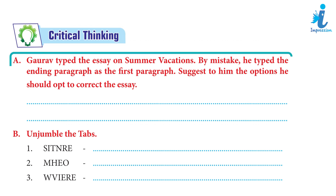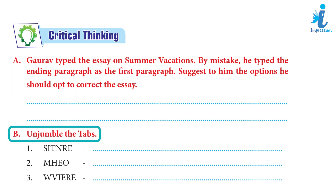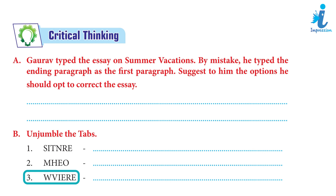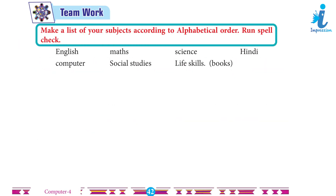Critical Thinking. A. Gotta typed an essay on summer vacations. By mistake, he typed the ending paragraph as the first paragraph. Suggest to him the option he should adopt to correct the essay. Answer: After you have done typing a section of text in Microsoft Word, you may need to move it somewhere else. You can use the Moving Text option to correct the essay. B. Unjumble the tabs: 1. Insert. 2. Home. 3. Review. Team Work: Make a list of your subjects according to alphabetical order. Run Spell Check. Answer: Students will do it themselves.